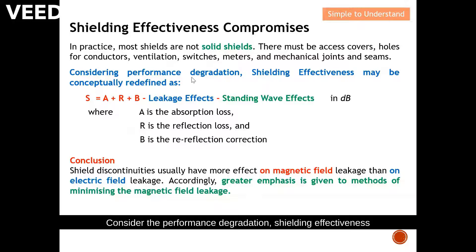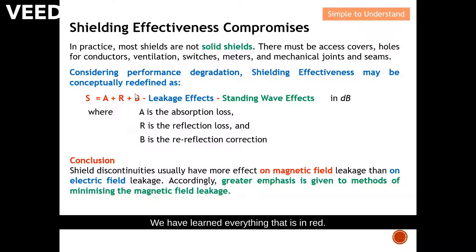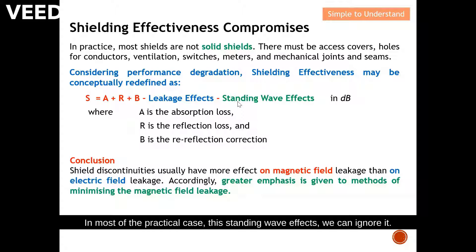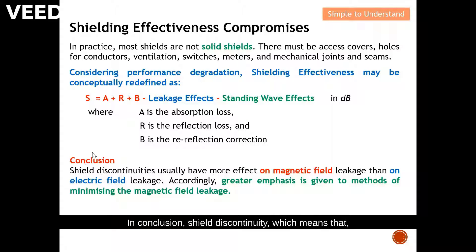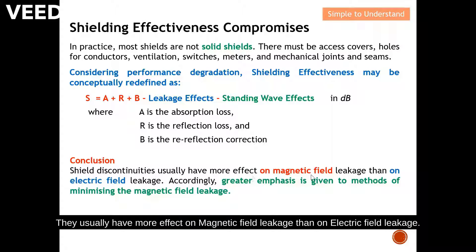Considering performance degradation, shielding effectiveness may be conceptually redefined by an equation. We have learned what is absorbed — today we learn about the leakage effect and the standing wave effect. In most practical cases, the standing wave effect can be ignored. Shield discontinuities — such as ventilation holes or slots — usually have more effect on magnetic field leakage than on electric field leakage.